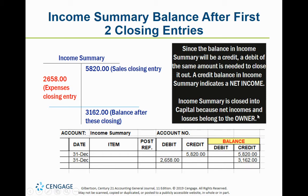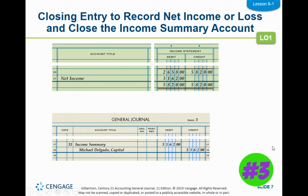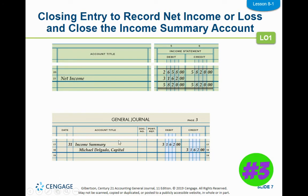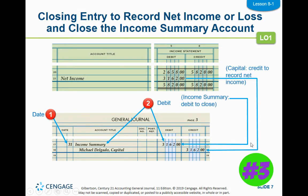Income summary summarizes our income. We have a net income of $3,162, which technically belongs to the owner. The account that summarizes the owner's rights to the assets of the business is our capital account. So we are now going to close income summary into capital. Capital has a normal credit balance. To make income summary zero, we have to debit it. So we debit income summary and credit capital, which takes the net income and puts it into the owner's capital account.